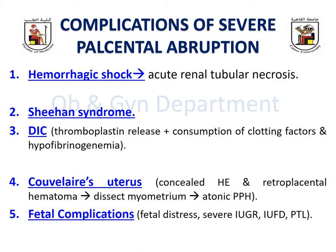Sheehan syndrome may occur if severe hemorrhage and shock lead to necrosis of the anterior pituitary vessels, resulting in anterior pituitary failure. Disseminated intravascular coagulopathy (DIC) is a very serious condition resulting from thromboplastin release, consumption of clotting factors, and hypofibrinogenemia — activating the coagulation cascade, destroying the coagulation system, and ending in a vicious circle of disseminated coagulopathy.